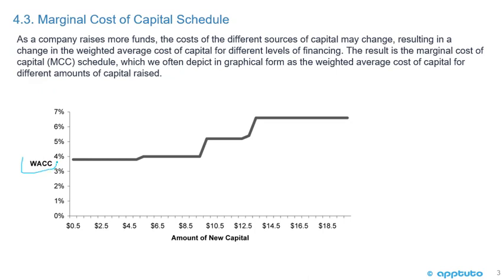Using a similar chart, the y-axis is now the weighted average cost of capital, while the x-axis remains the amount of new capital. The result is the marginal cost of capital schedule, often depicted graphically as the weighted average cost of capital for different amounts of capital raised. As more capital is raised, there are certain breakpoints where the WACC steps up.